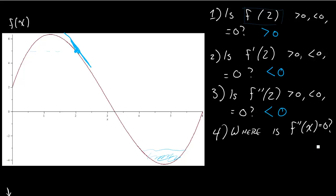Now, if they ask you to find where f double prime is equal to 0, that's going to be where the concavity switches. So this part is definitely concave down, this part is definitely concave up — where does it switch? I would say somewhere around 2.75. A lot of times in your homework, if they ask you this, it'll be an integer or a little bit easier to pick out than it is here.